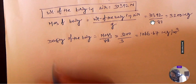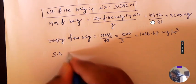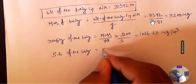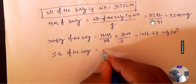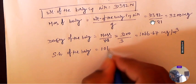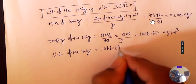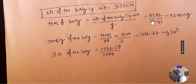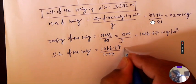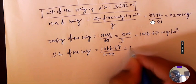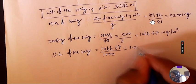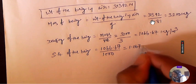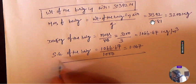We have to find the specific gravity of the body. The formula is: density of the body divided by the density of the standard fluid. So 1066.67 divided by 1000 gives approximately 1.067. This is the specific gravity of the body.